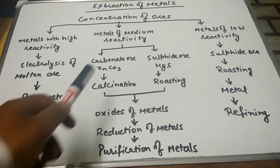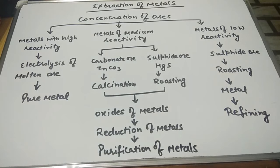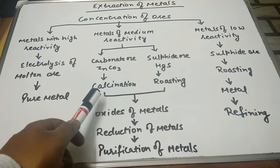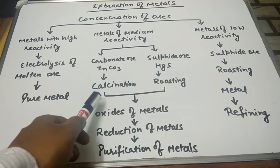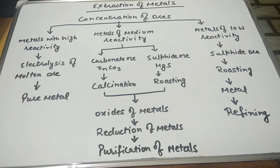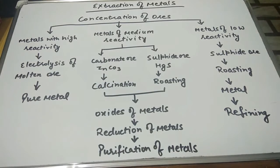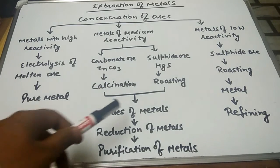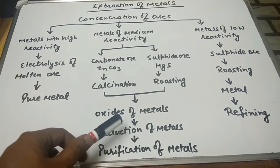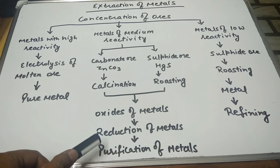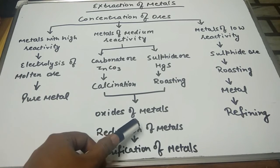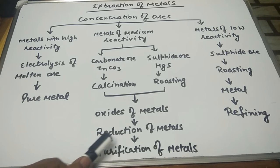Like zinc carbonate or mercury sulphide. Carbonates can be extracted, or we can say the metals can be extracted from the carbonate with the help of calcination, whereas sulphides with the help of roasting. After these two processes, they will go through a similar process: oxides of metals we will get, then the reduction of metals.